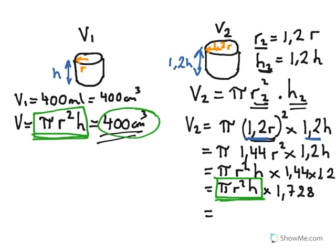We know that this volume equals pi r squared h, which we have a value for, 400 milliliters or 400 centimeters cubed, multiplied by a factor of 1.728. We can use our calculators there to get the answer here, 400 times 1.728, giving us an answer of 691.2 centimeters cubed.